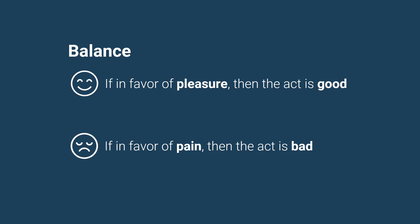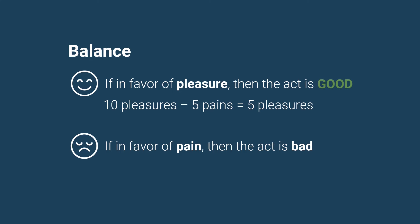For example, suppose we have an action that produces 10 pleasures and 5 pains, and has a balance therefore of 5 in favor of pleasure. In this case, the action, for Bentham, is morally good or right. Whereas if an action produces 20 pains and just 8 pleasures, and has a balance of 12 in favor of pain, then that action, for Bentham, is morally bad or wrong.